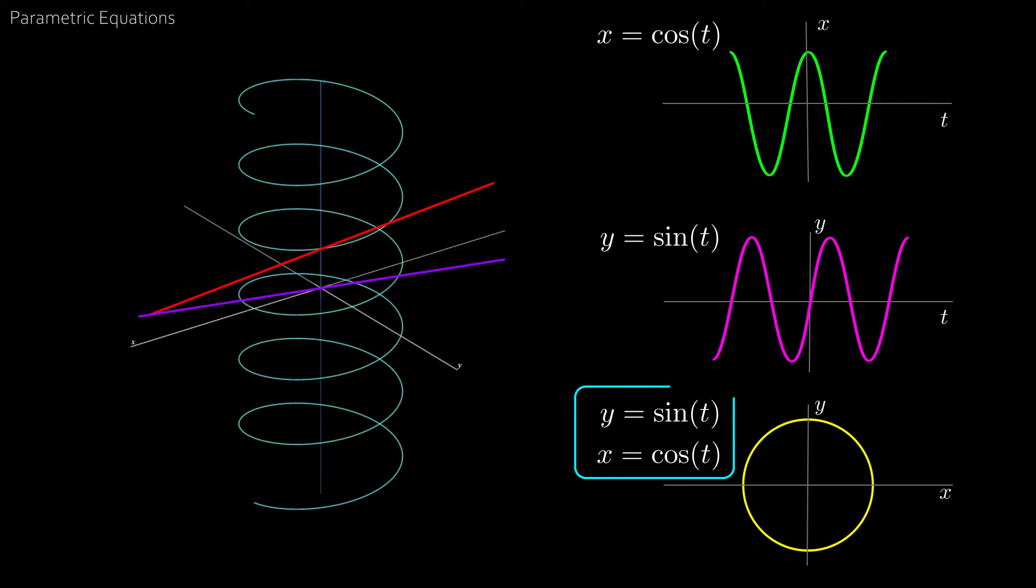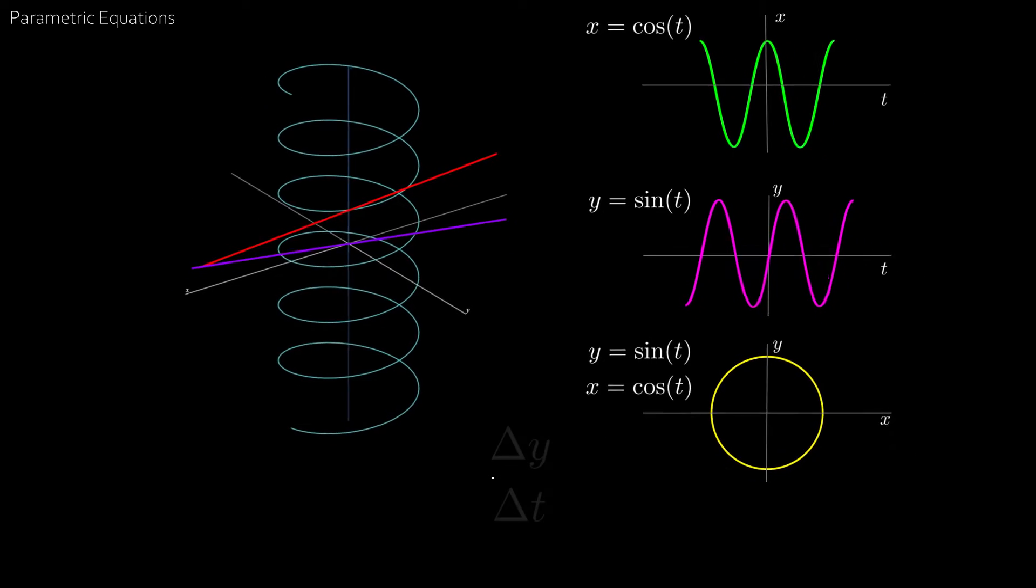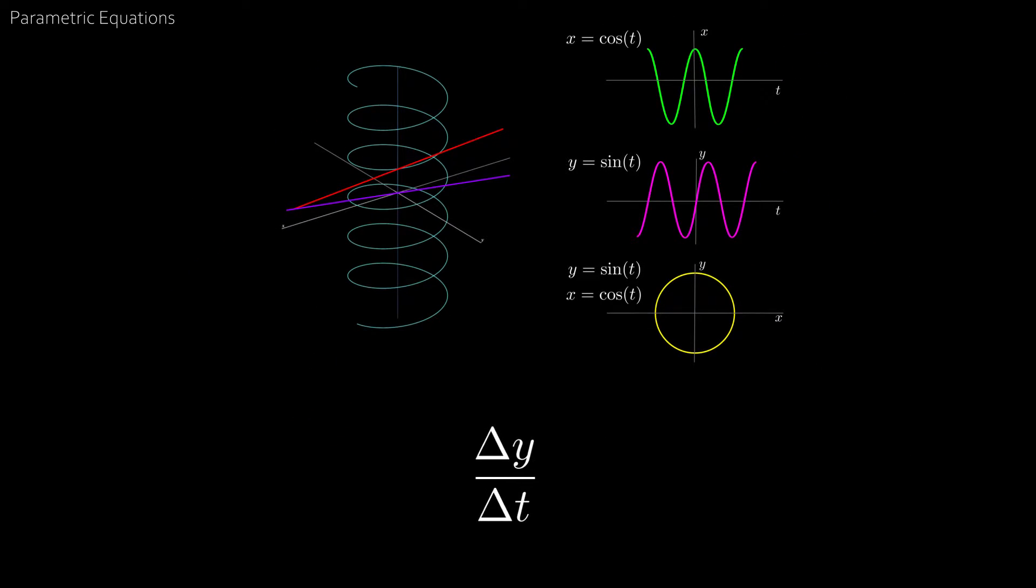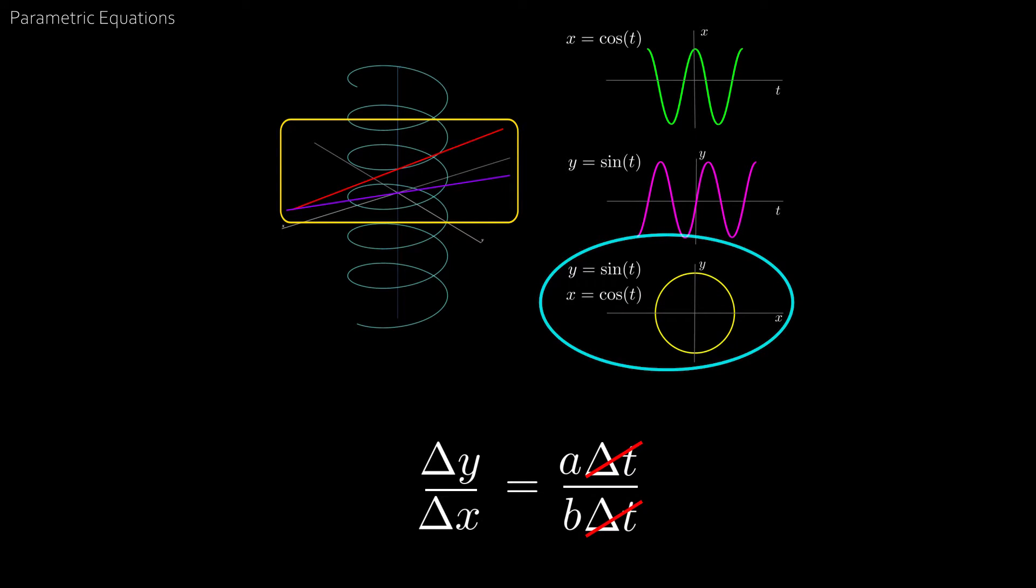Since we already know what y and x are in terms of t, we know what delta y over delta t is. Let's say it equals some value a at t. Similarly, delta x over delta t equals some value b at the same value of t. Then we can rearrange and find delta y over delta x. And we see that delta t cancels. This is equivalent to creating the projection, and the cancellation of delta t is ingrained within delta y over delta x because if we look at the spiral from a top view, the t-axis is omitted.